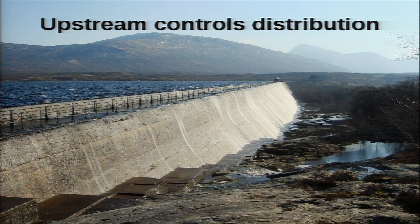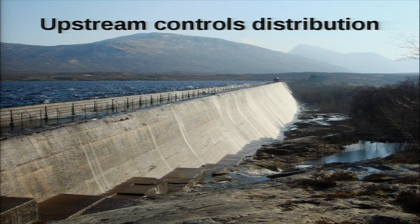An upstream is someone who controls distribution. I take the image of a dam. Let's imagine that every patch, every potential patch to a software, let's say to OpenStack, is a drop behind the dam. Then the upstream is the person who controls the gates of the dam and lets patches through, and they irrigate what we would call a free software project.